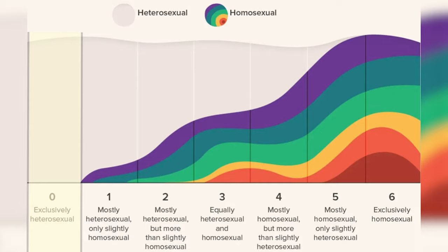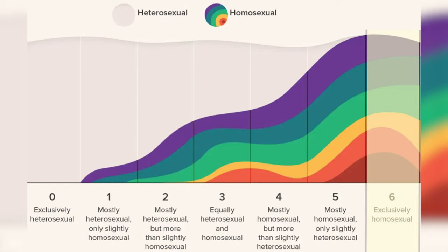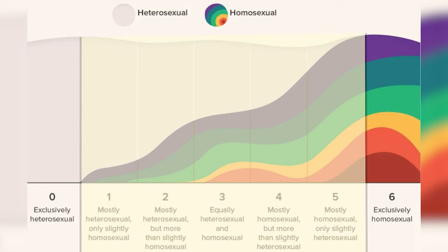On the Kinsey Scale, zero represents exclusively heterosexual with no homosexual experiences or desires. Six represents exclusively homosexual with no heterosexual experiences or desires. One through five represent the smooth continuum between those ends, with three representing bisexuality. In Kinsey's research, there were plenty of people represented on each degree of the spectrum.